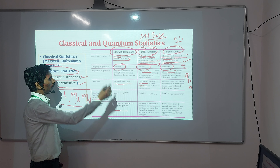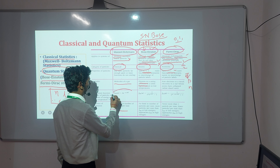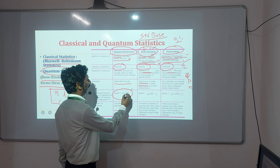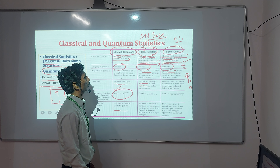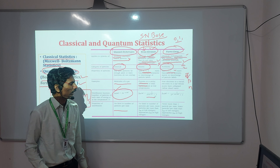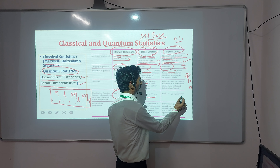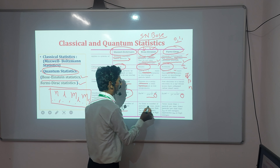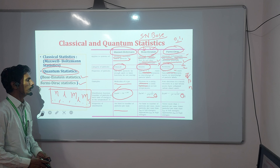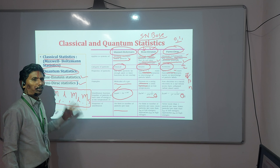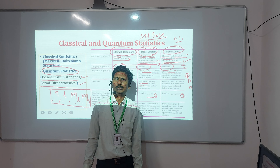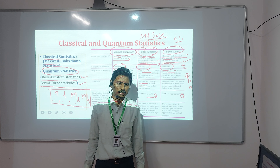We can also discuss the distribution functions of each type. The distribution function for Maxwell-Boltzmann is equal to A·e^(−E/kT). For Bose-Einstein, it is 1/(e^(E/kT) − 1), and for Fermi-Dirac it is 1/(e^(E/kT) + 1). The only difference between Bose-Einstein and Fermi-Dirac is the plus or minus one. With this, I am concluding this discussion on the difference between classical statistics and quantum statistics.